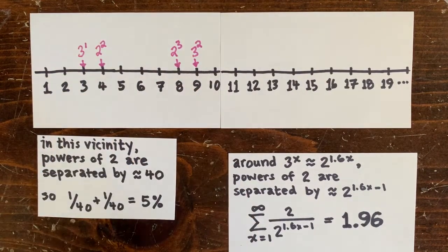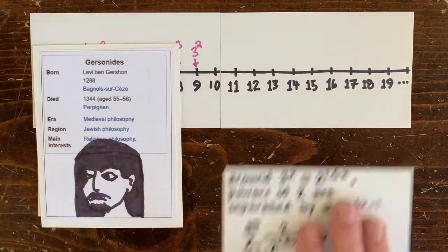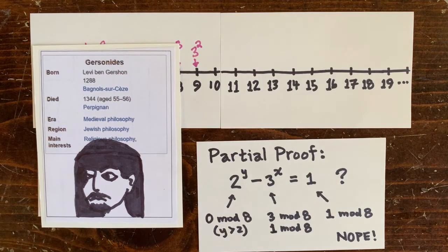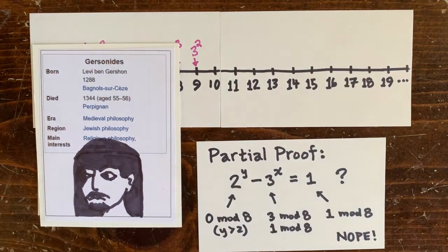Because in the year 1343, Gersonite showed that after 2 and 3 and 8 and 9, there are no more adjacent powers of 2 and 3.